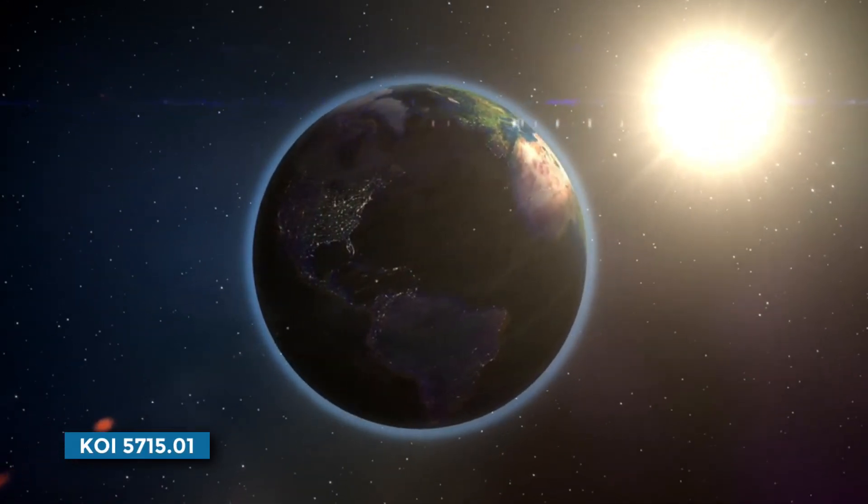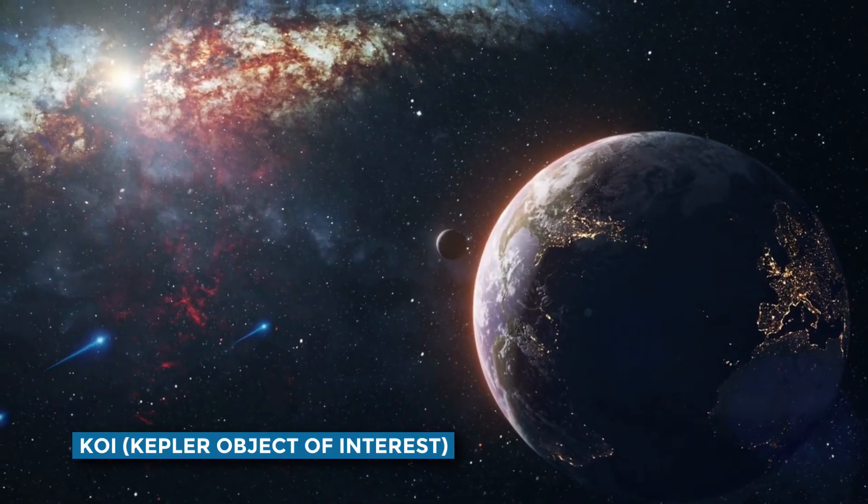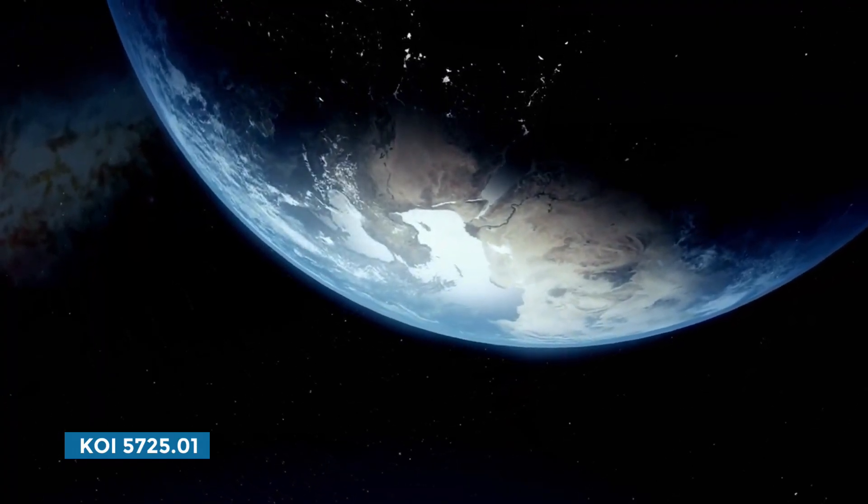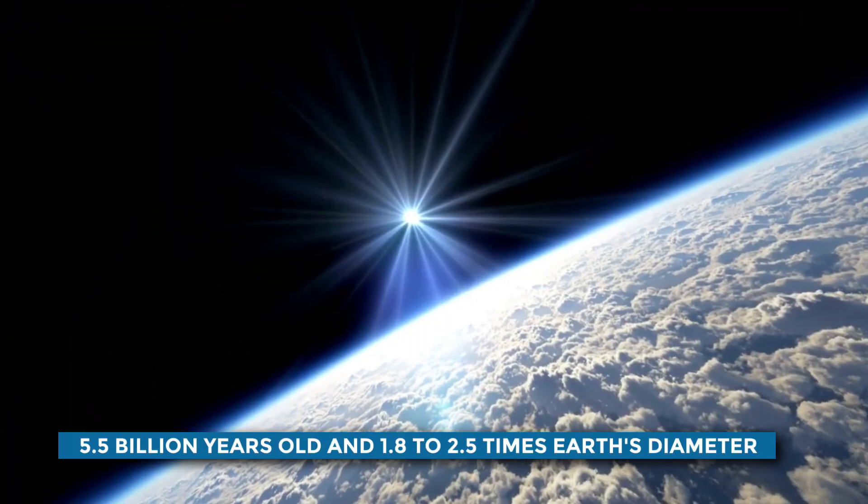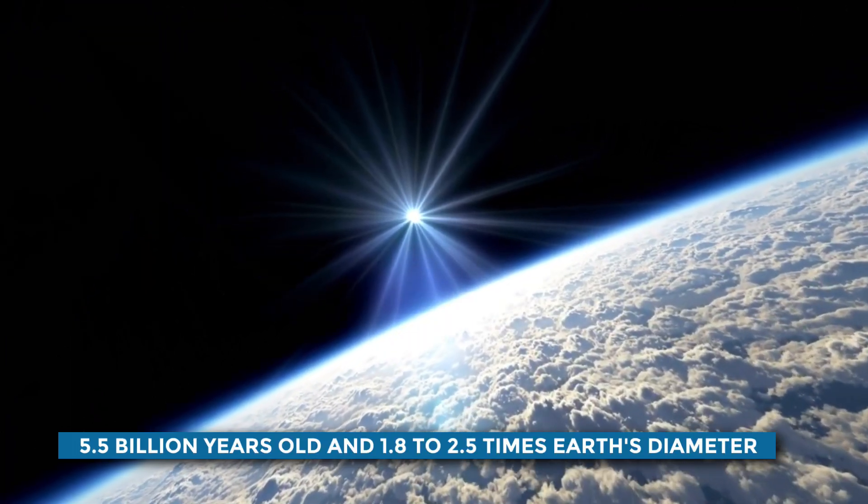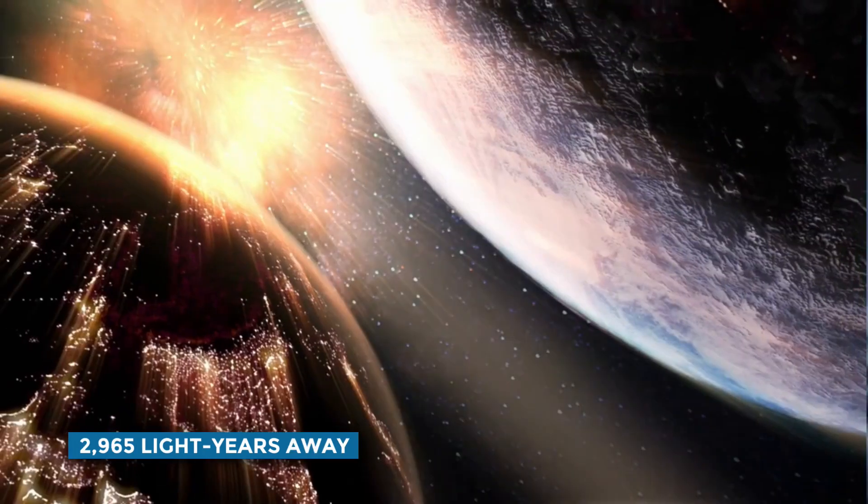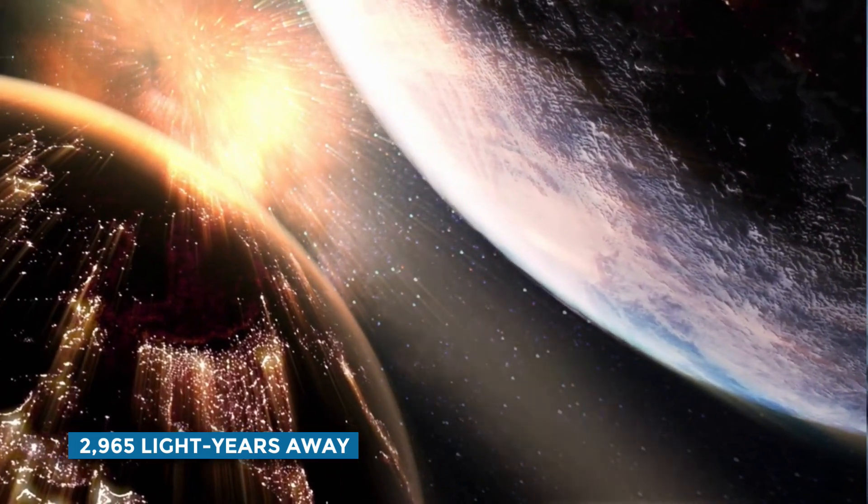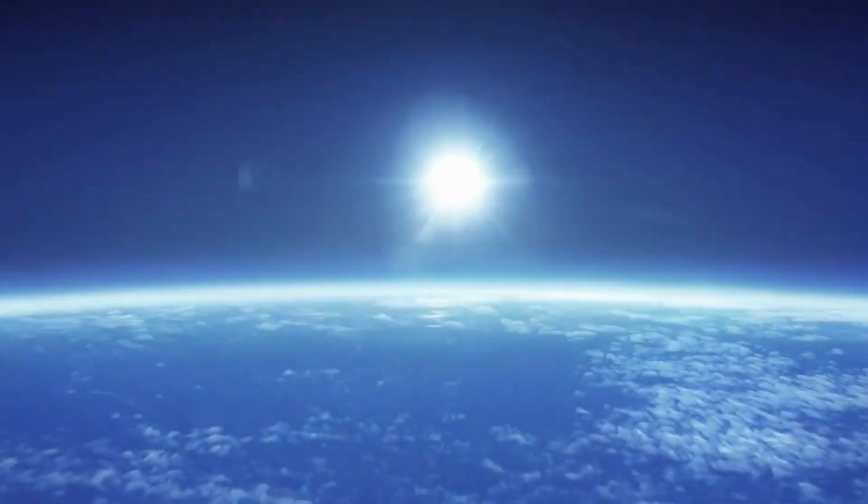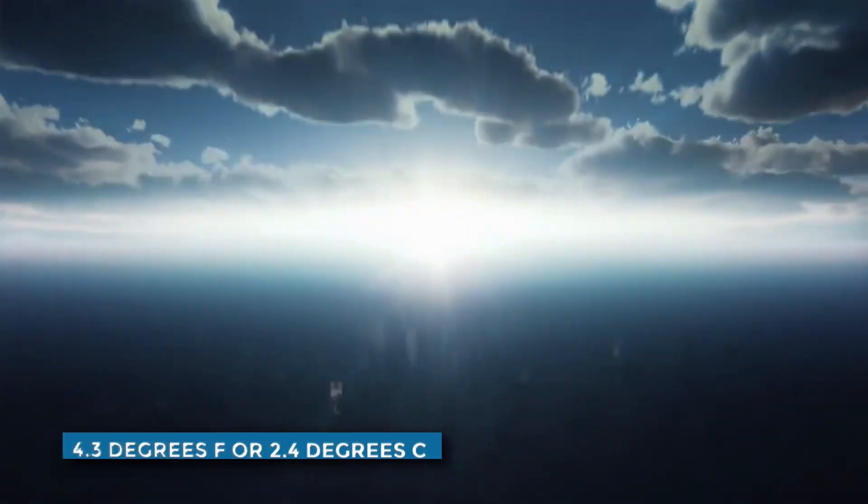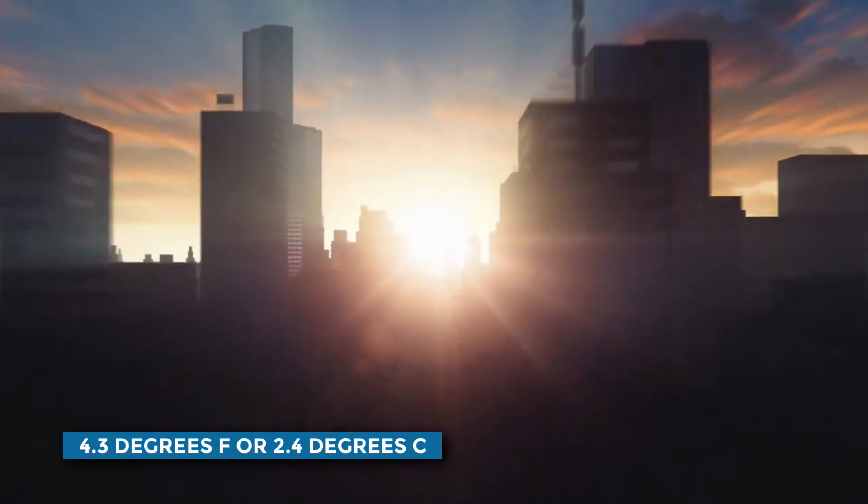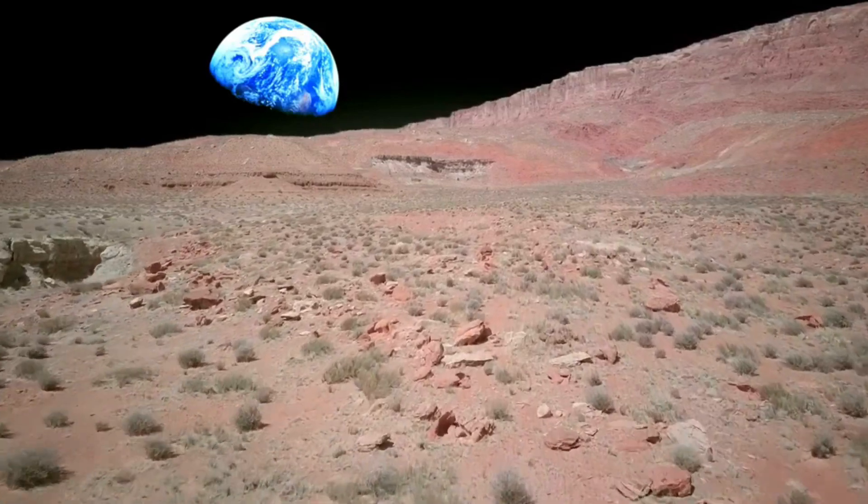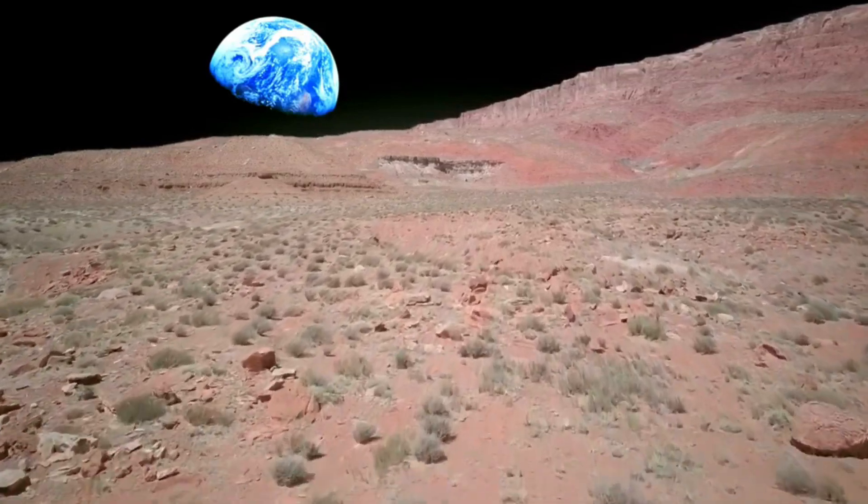KOI 5715.01, KOI stands for Kepler Object of Interest. We're talking about KOI 5715.01, a planet about 5.5 billion years old and 1.8 to 2.5 times Earth's diameter, orbiting an orange dwarf, which is at a distance of 2,965 light-years away. The planet is estimated to have an average surface temperature of about 4.3 degrees Fahrenheit, or 2.4 degrees Celsius cooler than that of Earth. But if it has more greenhouse gases than Earth to trap heat, it might just turn out to be super habitable.